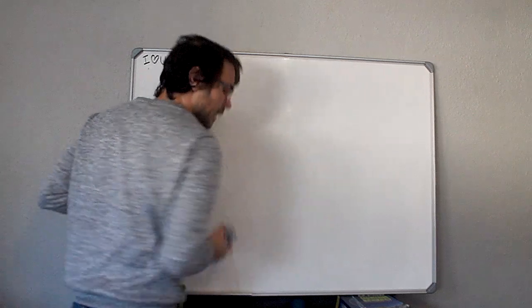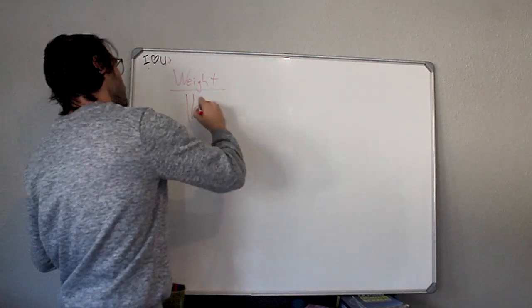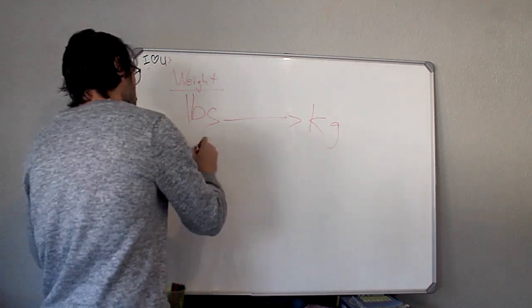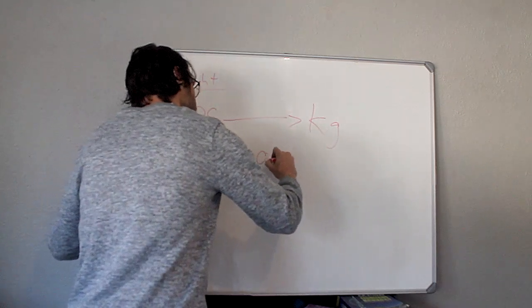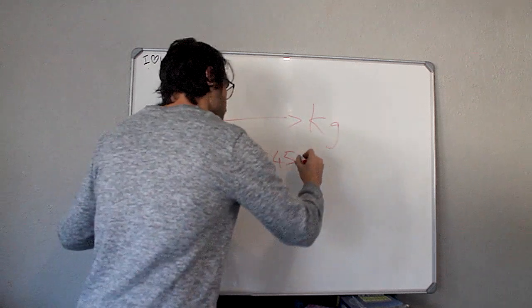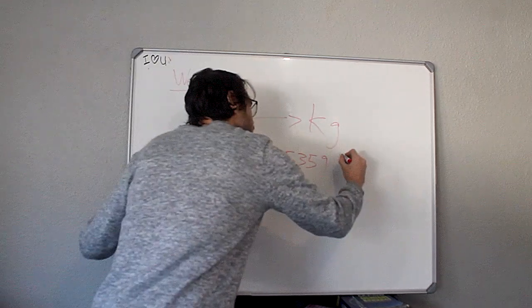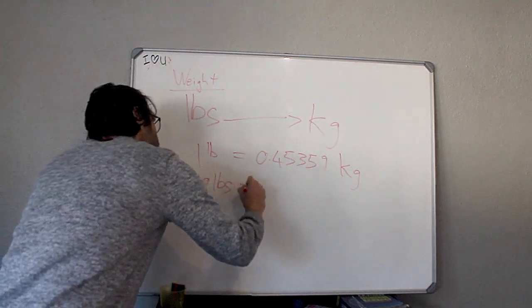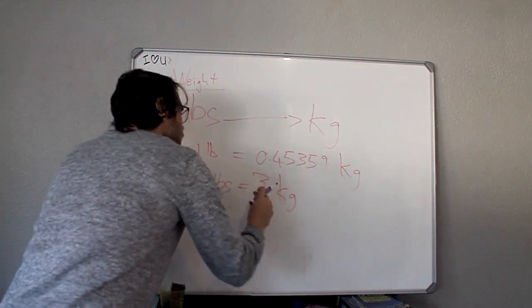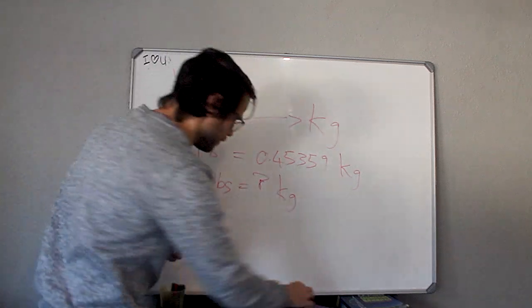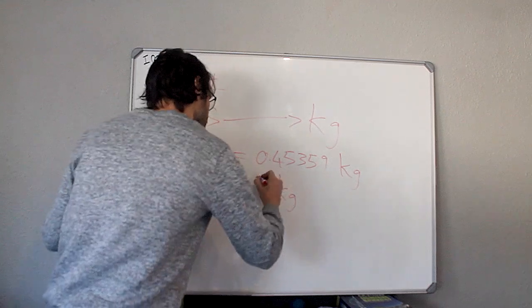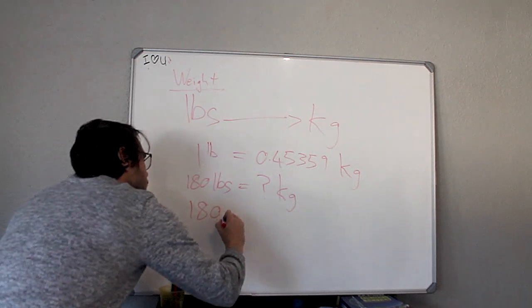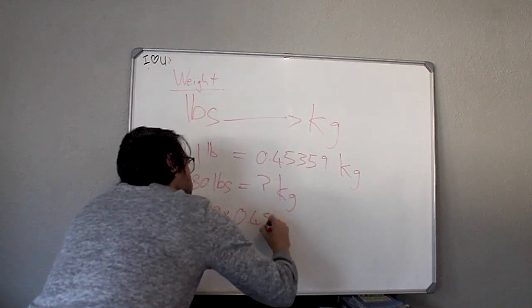If I'm given a pounds value and I want to convert that to kilograms, I know that one pound is equals to 0.45359 kilograms. Which means that if I'm given, let's say, 180 pounds equals to what in kilograms, that's the question mark. Now we have to take that 180 value and multiply it by 0.45359.